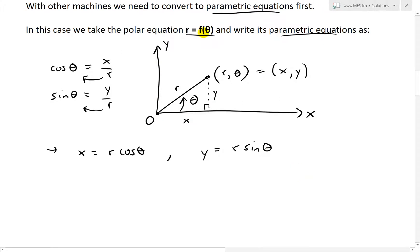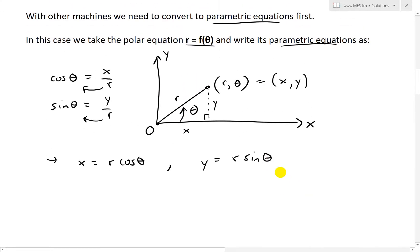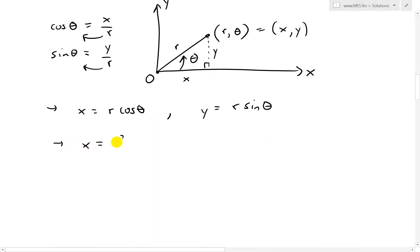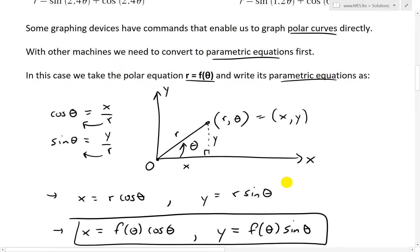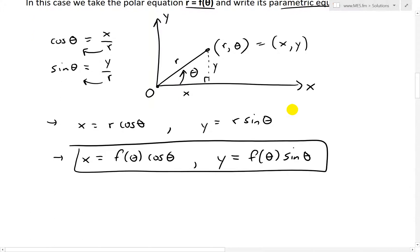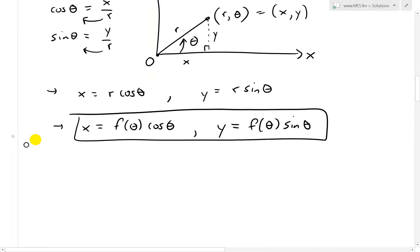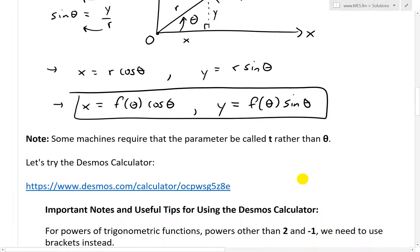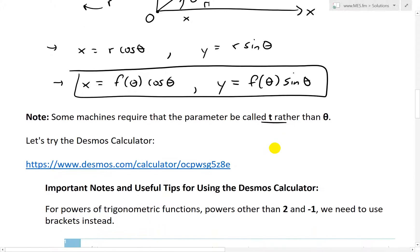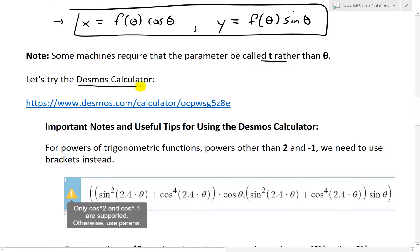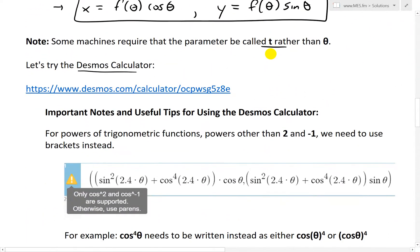Now we know that R is just a function of theta, so we can replace this by F of theta. We get X equals F of theta cosine theta and Y equals F of theta sine theta. So we have now parametric equations for the polar curves, which are in Cartesian coordinates. Here's a note from my calculus book: some machines require that the parameter be called T rather than theta, and that's the case with the Desmos calculator as well. Let's try the Desmos calculator to see if we can graph these two.